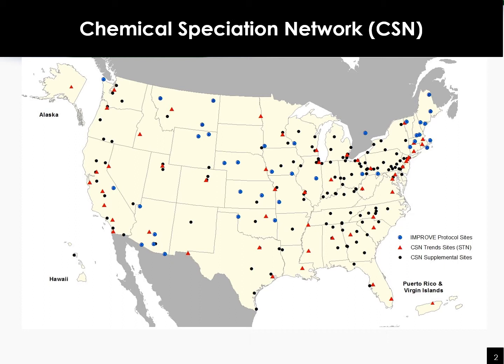Particles come in many sizes and shapes and can be made up of many different chemicals. Some particles are emitted directly from a source, such as construction sites, unpaved roads, fields, smokestacks, or fires. Most particles form in the air as a result of complex reactions of emitted pollutants from many different types of sources, such as power plants, industries, and automobiles.